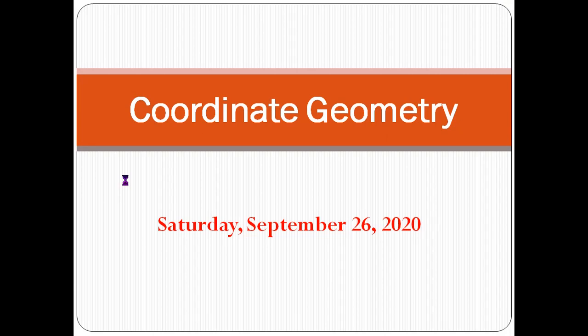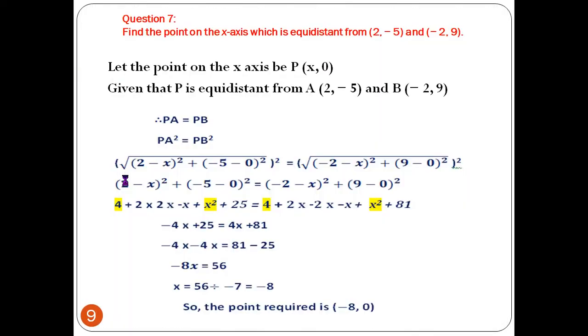This is question 7 from Exercise 7.1. Find the point on the x-axis which is equidistant from (2, -5) and (-2, 9).